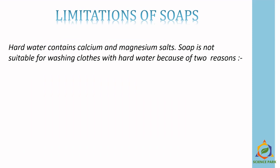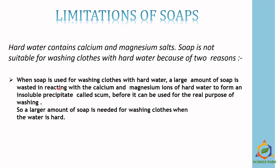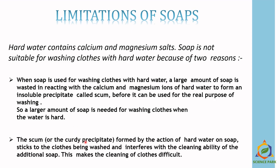There are certain limitations of soaps. Water which contains calcium and magnesium salts is called hard water. Soap is not suitable for washing clothes with hard water for two reasons: first, a large amount of soap is wasted reacting with calcium and magnesium ions of hard water to form an insoluble precipitate called scum before it can serve its real purpose. Second, the scum, a milky white curdy precipitate, sticks to the clothes being washed and interferes with the cleaning ability of additional soap, making cleaning difficult.